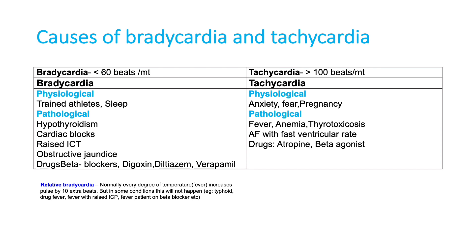Atrial fibrillation with fast ventricular rate, atropine, and beta-agonists like salbutamol can also produce tachycardia. Relative bradycardia means the expected range of heart rate for a given temperature is not achieved. Whenever there is high-grade fever, we expect tachycardia. But if that response is absent — for example, a patient with enteric fever who has very high fever but a heart rate that is not proportionally elevated — that is called relative bradycardia.